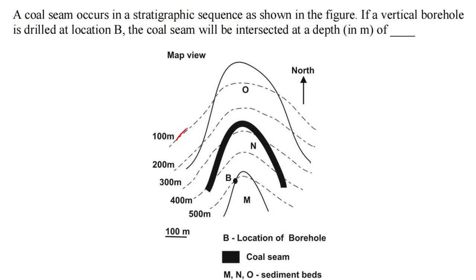These dotted lines are the elevation contours and these black continuous lines are the bedding planes. This is a contact between bed O and another bed which is not marked there, maybe B. Then there is a coal seam — the black thick line is the coal seam, marked here. Then there is bed N and bed M, and these lines are the contact between these beds.